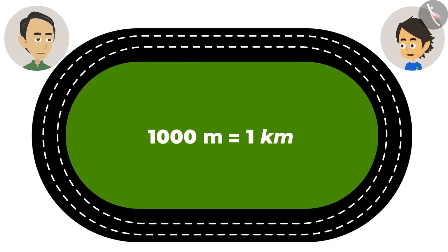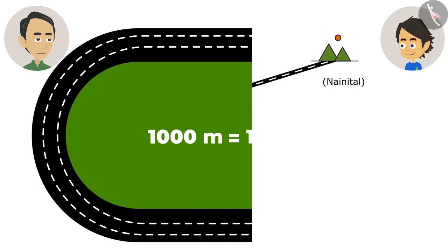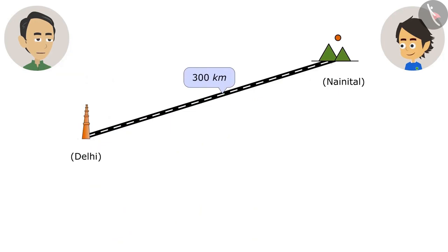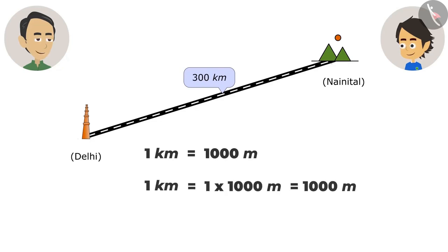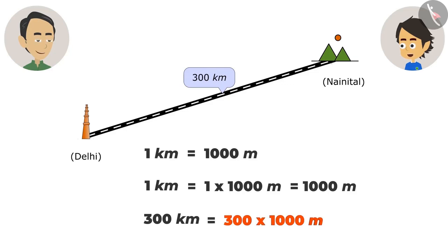Then one kilometer is a lot because the people running in it were very tired. And Nainital is 300 kilometers away. As it is so far, we are going by train. If 1 kilometer is equal to 1000 meters, how many meters away is Nainital? It is very easy to calculate. Multiply by 1000 to convert kilometers into meters. To convert 300 kilometers into meters, multiply 300 by 1000. The answer is 3 lakh meters. It means we will go 3 lakh meters away. That's why we say it's 300 kilometers away.